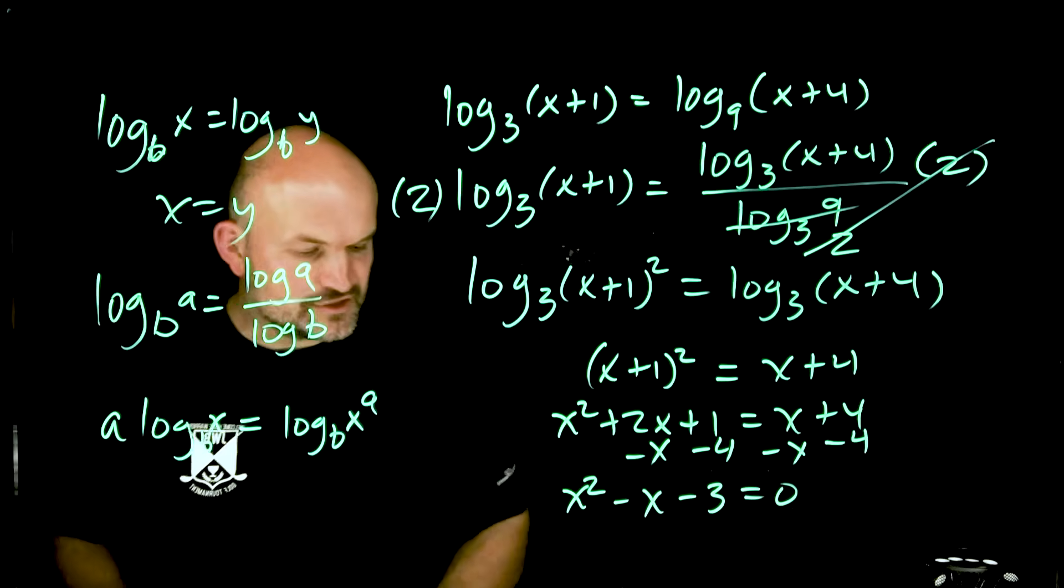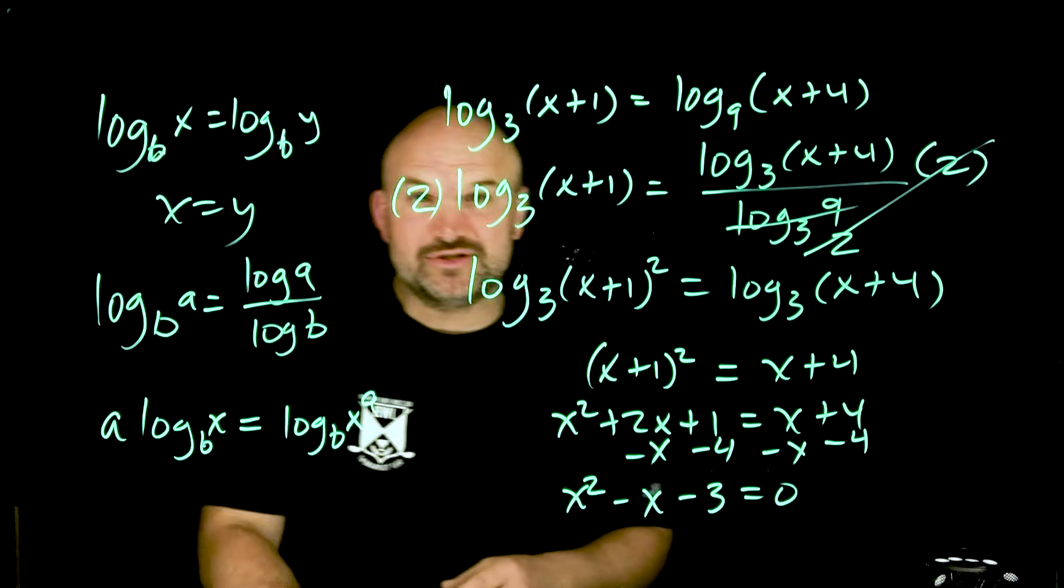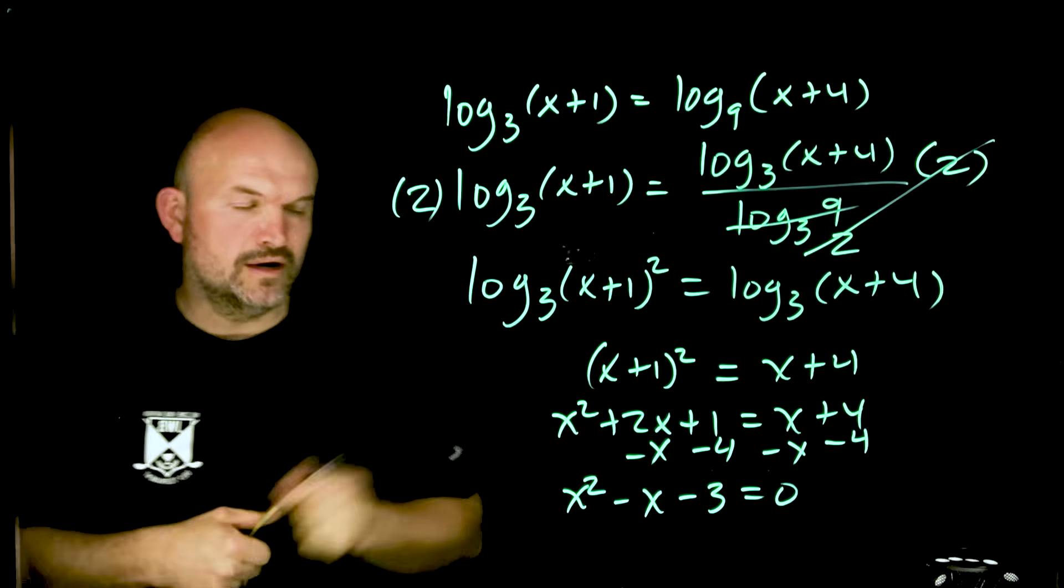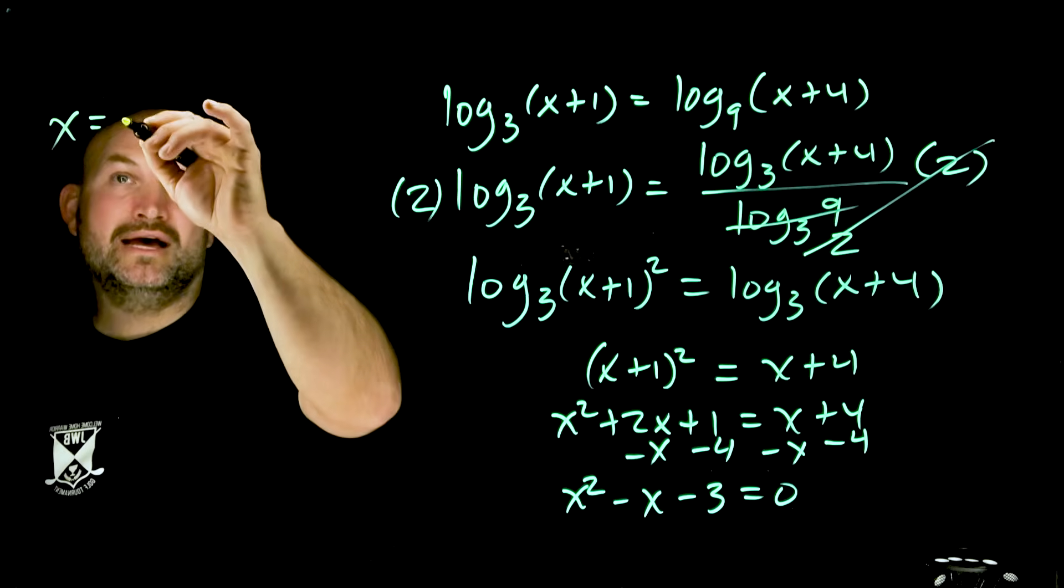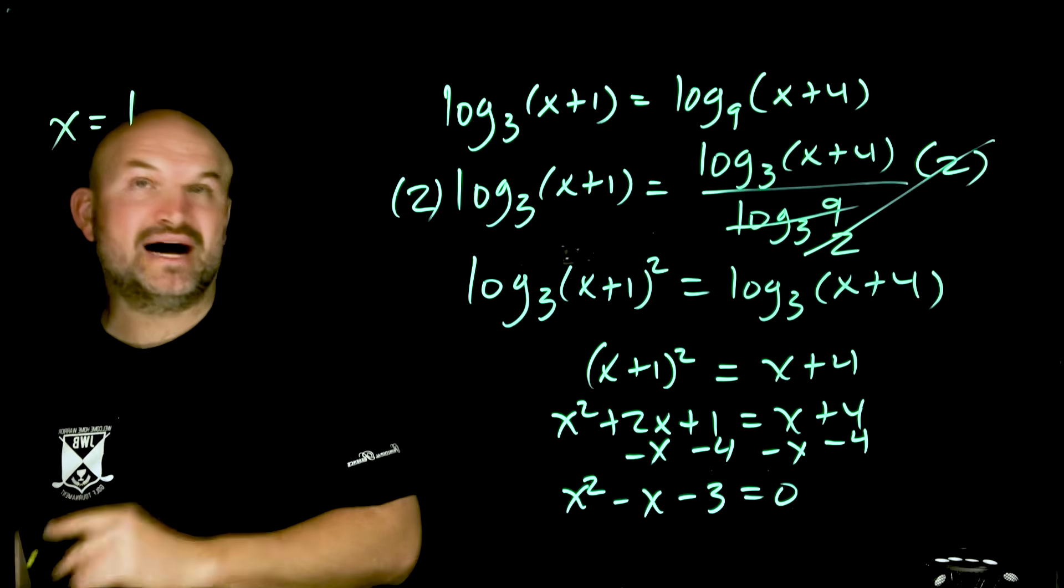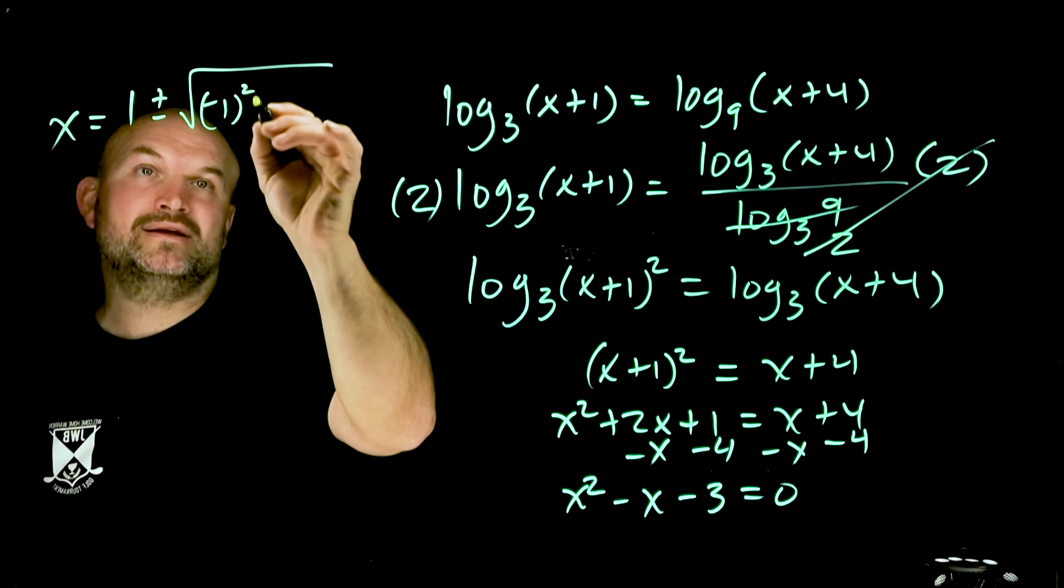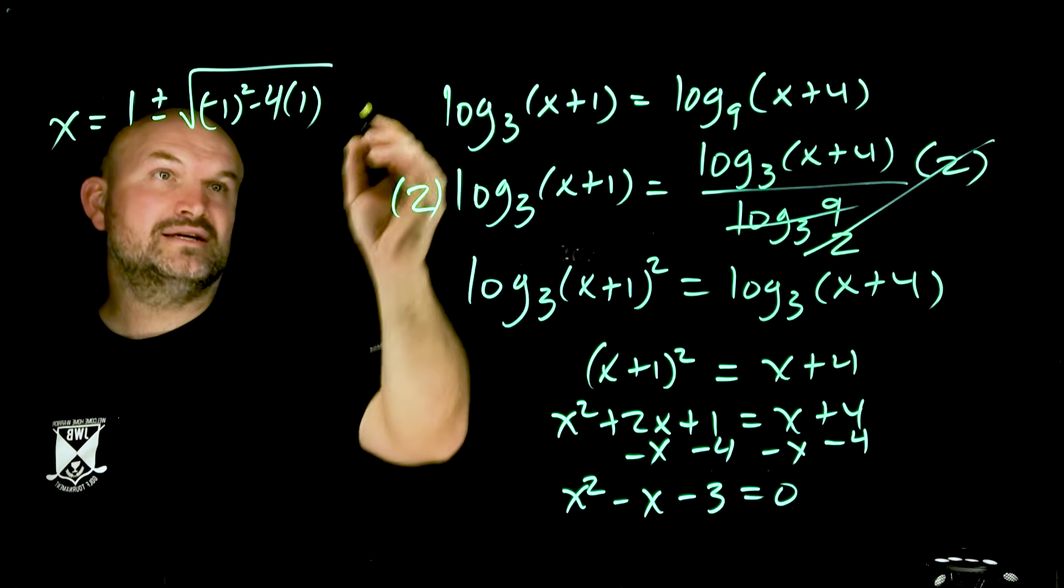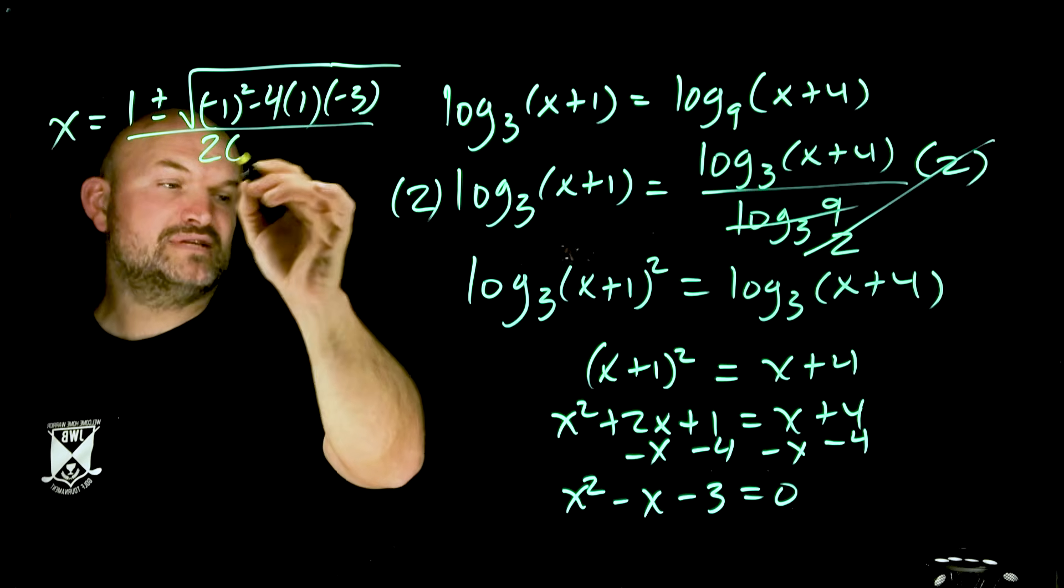Now I know that there's no two numbers that multiply to give me negative 3 that are added to give me negative 1. So unfortunately, ladies and gentlemen, we need to go to good old quadratic formula. All right, so remember the quadratic formula: the solutions to this x is going to equal opposite of b, which in this case would be a positive 1, plus or minus the square root of my b squared minus 4 times a, which in this case is 1, times c, which is a negative 3, and that's all over 2 times a.